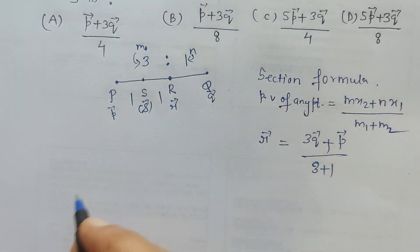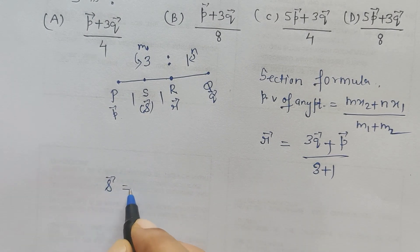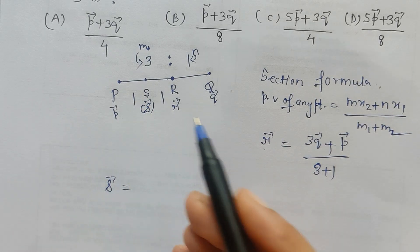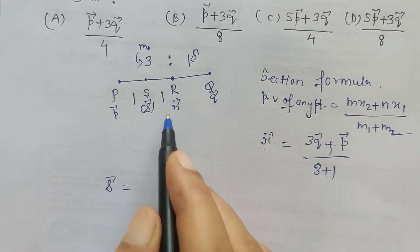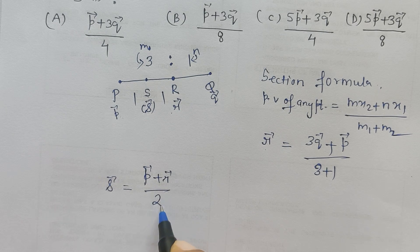So I get the position vector R vector, and then I have to again find the position vector of S vector which is the ultimate aim of the question. So here S vector is, again since it is the midpoint, the midpoint formula gives us P vector plus R vector upon 2. This is midpoint formula.